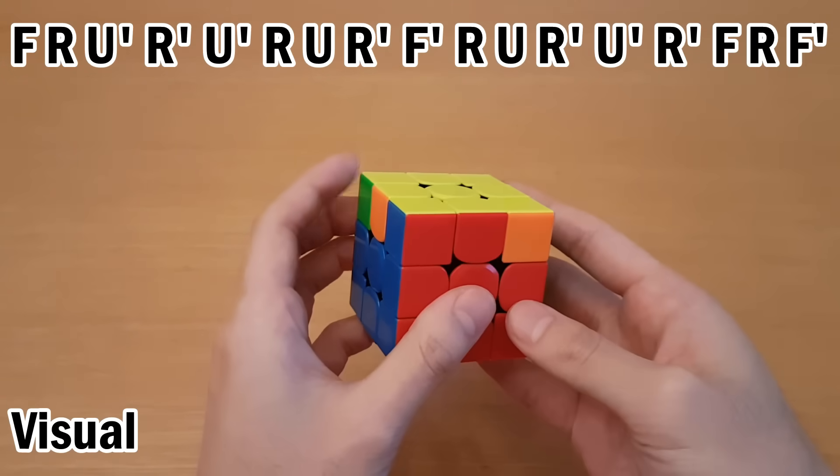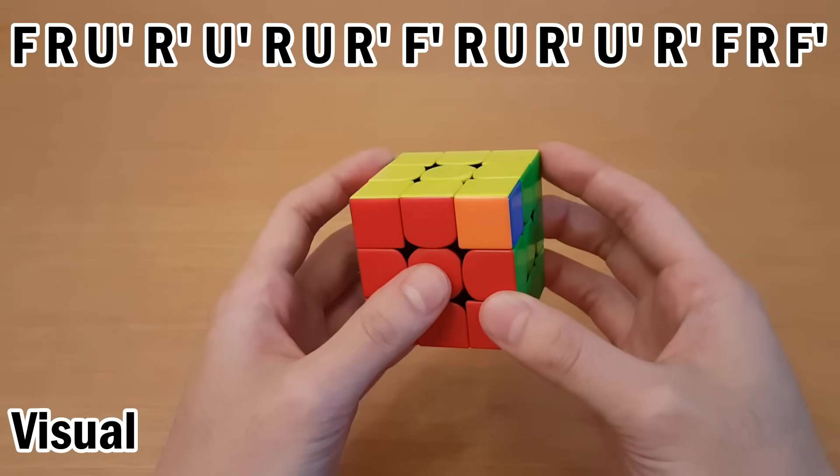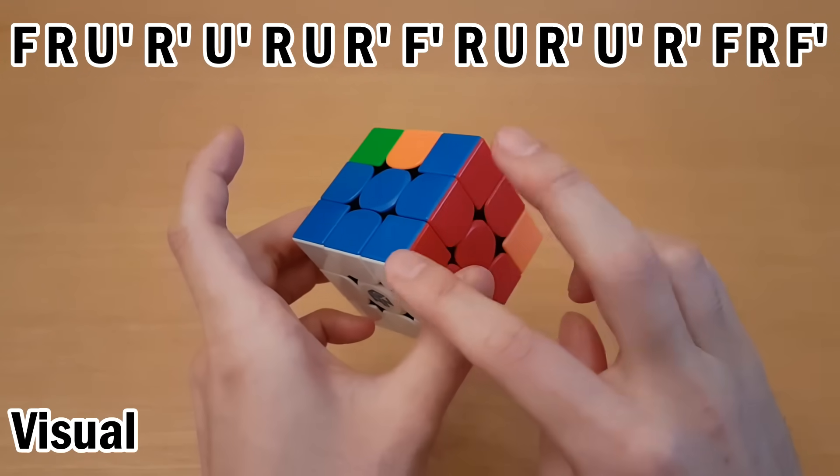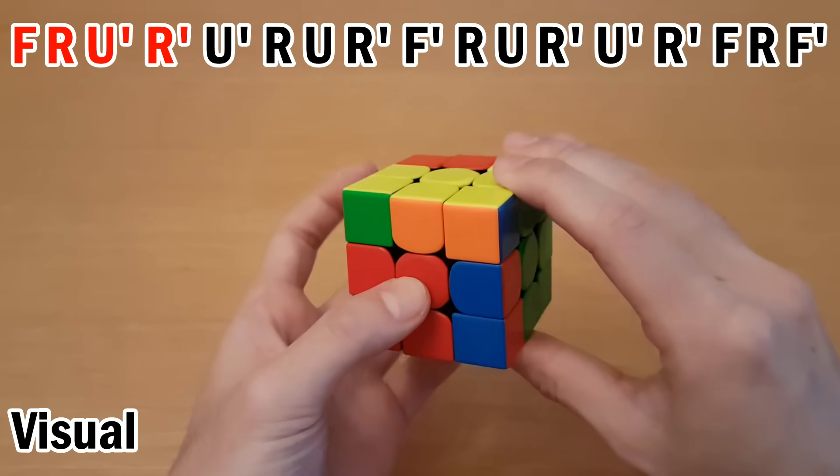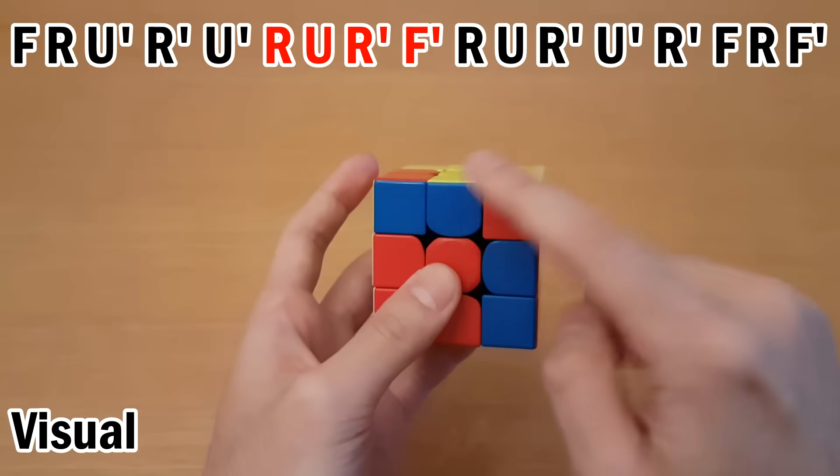Now for this PLL case, you can't condense the information the same way, but you can do it differently. Instead we can visually watch what this pair does as we go. So we start with an F move, put the pair here, remember just U', and then put the pair back.